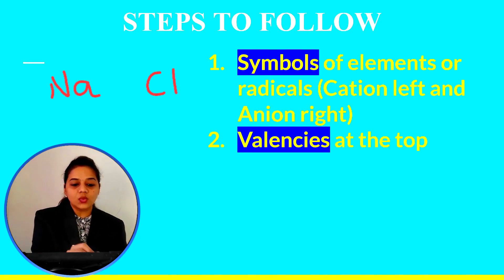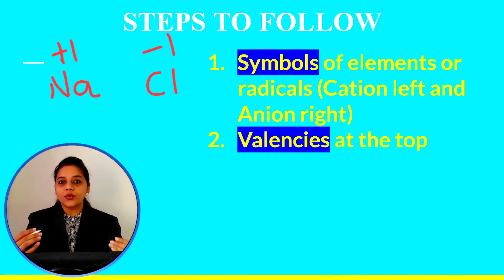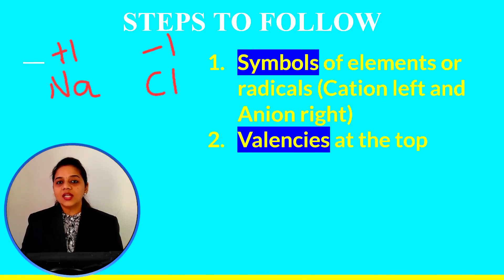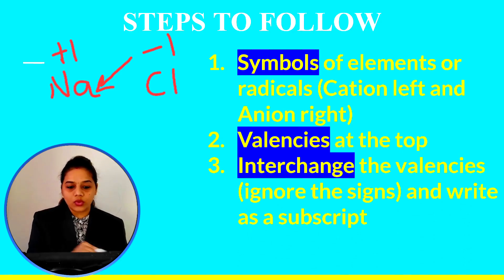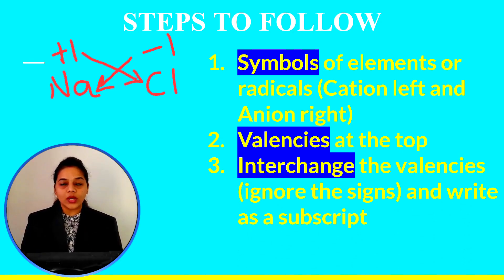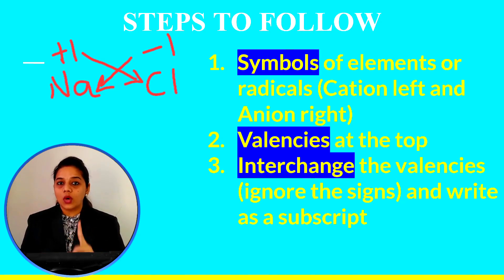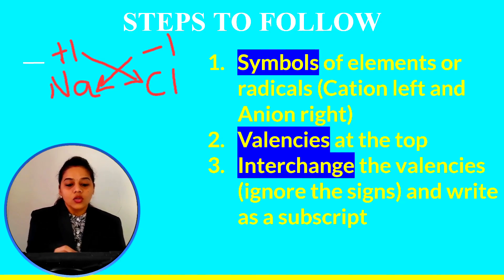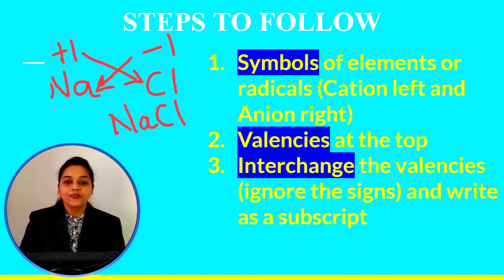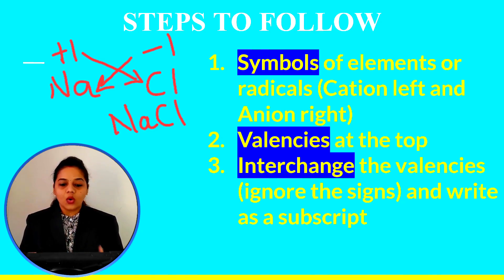The second step is to write the valencies of both the element and radical on top of the symbols. For example, sodium has a +1 valency and chlorine has a -1 valency. The third step is to interchange the valencies — exchange them. Then ignore the positive and negative signs of the valencies, and also ignore the valency if it is 1. So the formula of sodium chloride will be NaCl.